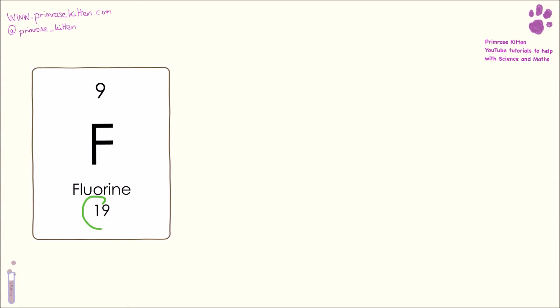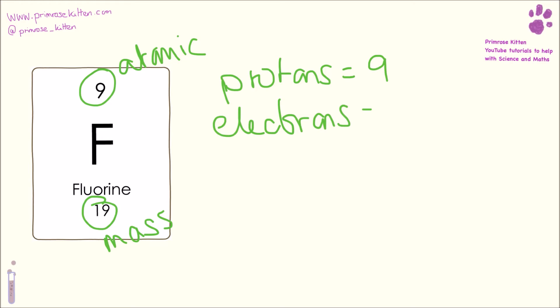Here we have fluorine. The mass number is 19, the atomic number is nine, so protons equal nine because that's the atomic number. Electrons equal nine because in an atom it's also the atomic number. And neutrons equal the mass, which is 19, minus the atomic, which is nine, so that makes 10.